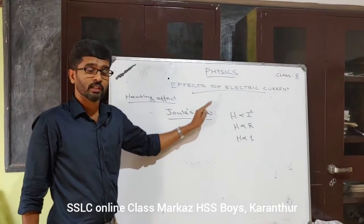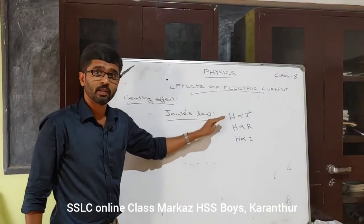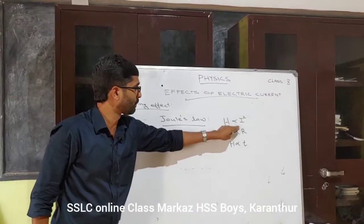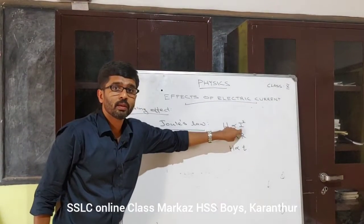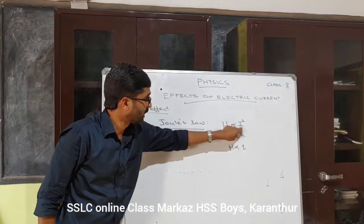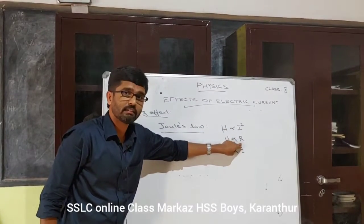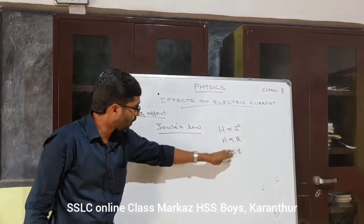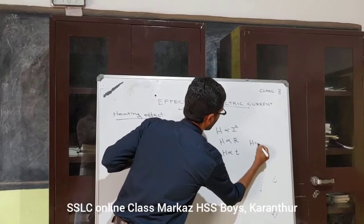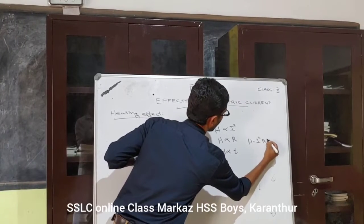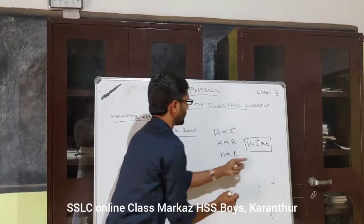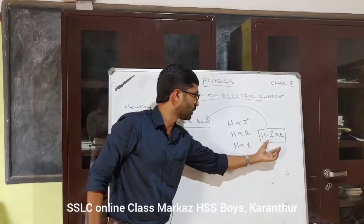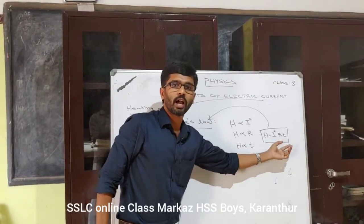According to this law, the heat developed in a conductor when a current flows is directly proportional to the product of the square of the current, the resistance, and the time of flow. By combining all three proportionalities, we get H equals I squared times R times T. This is Joule's law of heating, with the standard equation H equals I²RT.